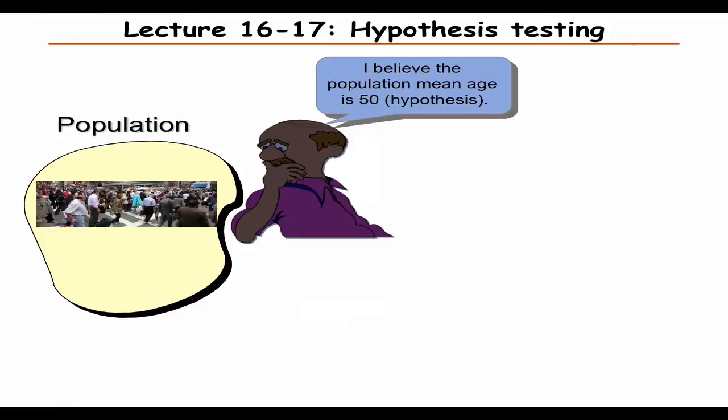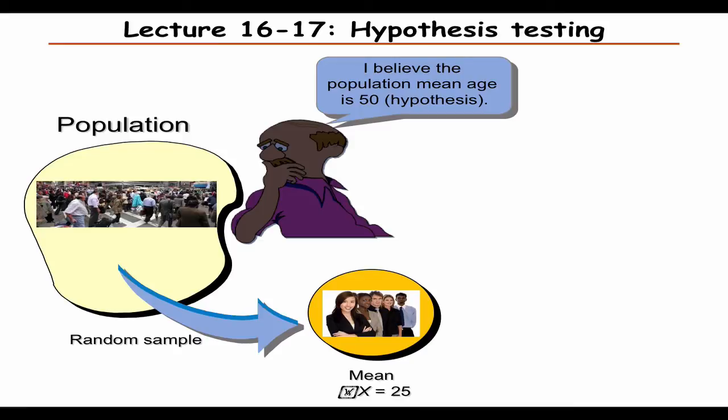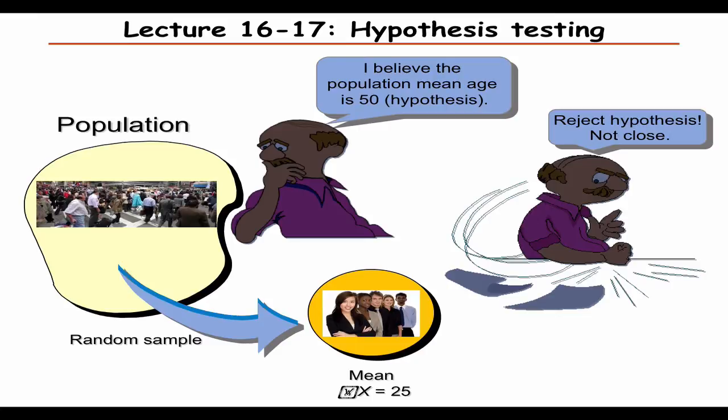The other statistical topic you'll have a lot of use for is hypothesis testing. This is an example of someone who makes a hypothesis that the median age of the population is 50. Then you take a sample and it turns out the average age is 25, so you reject the hypothesis. This is the basis for hypothesis testing, and there will be two full lectures on this giving lots of details and practice.